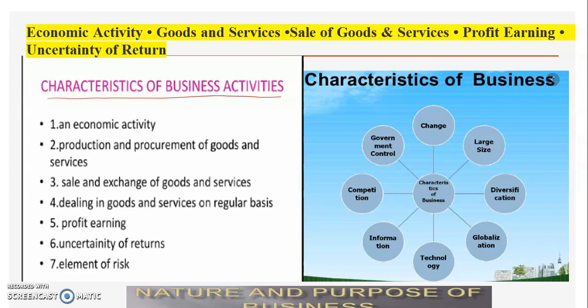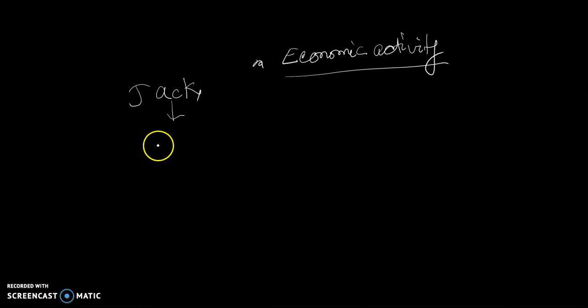The first characteristic, as you can see on the screen, is economic activity. Business is an economic activity — it should be an economic activity. For example, suppose a person named Jack is doing a business; he has a grocery shop.